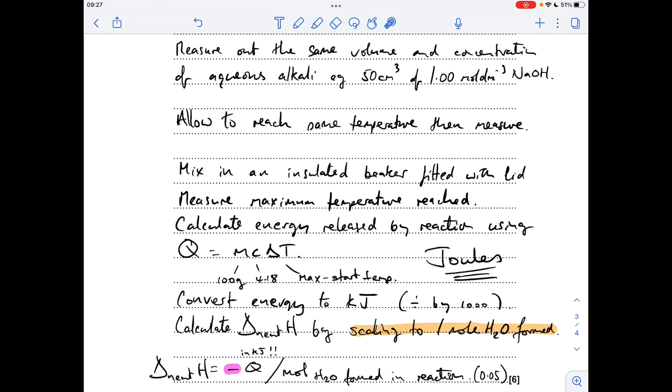So because we used 0.05 moles of acid and 0.05 moles of alkali, we're going to get 0.05 moles of water formed. The minus sign must be there because it's an exothermic reaction. Enthalpy change of neutralisation is an exothermic process.